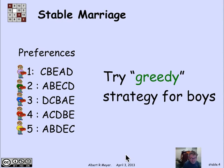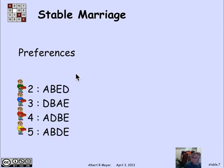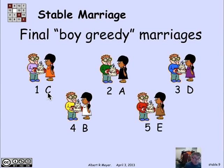One way to do it is to favor the boys using a greedy strategy. We look at boy preferences and try to give each boy the best possible choice. So boy one gets his first choice, girl C — they're married off and eliminated. Then boy two gets his next available choice, girl A. Continuing this way greedy for boys, we wind up with five marriages, ending with boy five married to girl E.